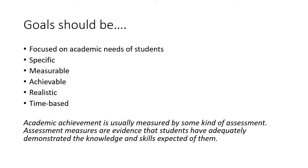Just a reminder: your school improvement goals used for the school trust lands should be focused on the academic needs of students. The goals should be specific, measurable, achievable, realistic, and time-based — meaning, is it going to be accomplished in the next couple of months or over the course of a school year? And how are you going to measure that? Academic achievement is usually measured by some kind of an assessment, so what kind of assessment are you going to use to measure the academic needs of students?